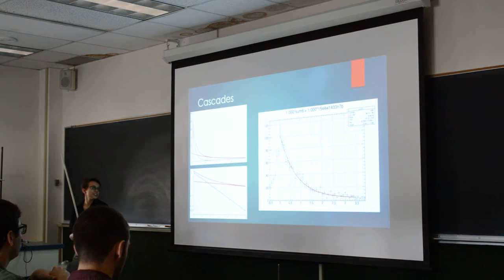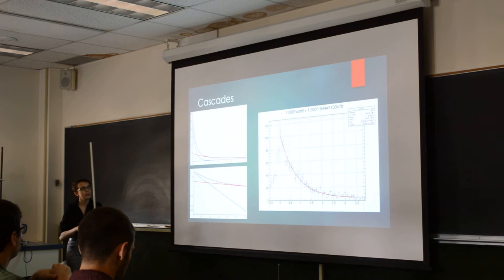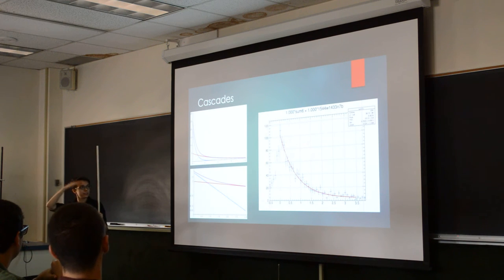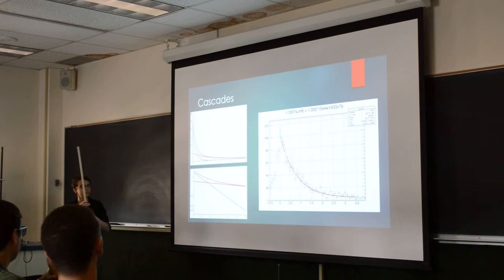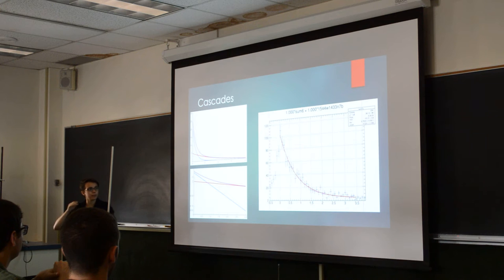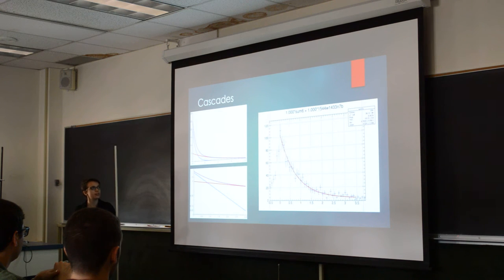It's unfortunately not just as simple as fitting an exponential curve, though, because of things called cascades. If you're looking at a particular transition, it's quite likely that there will be upper levels — even higher than your upper level — that are transitioning into your upper level, meaning that it's getting repopulated. That means that instead of just being a single exponential, it will be a sum of exponentials instead.